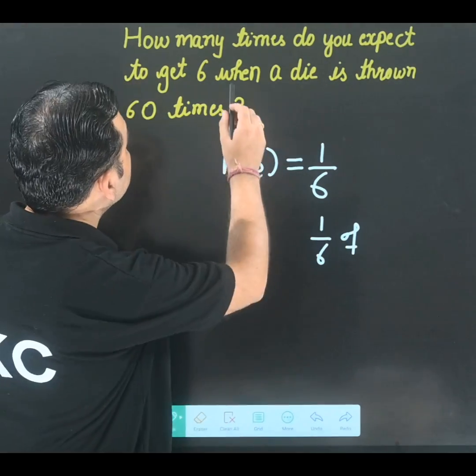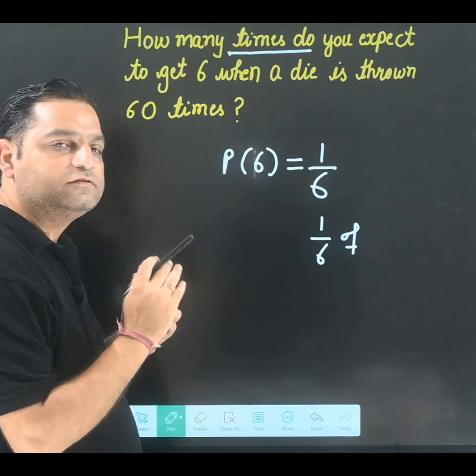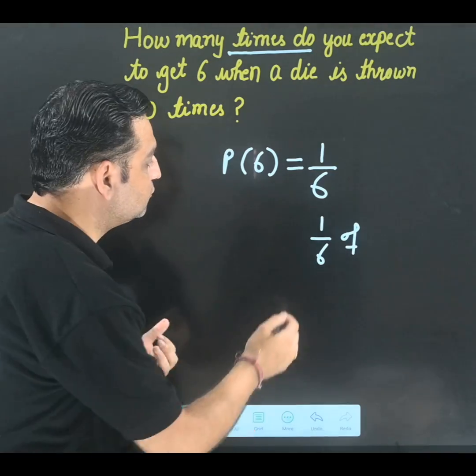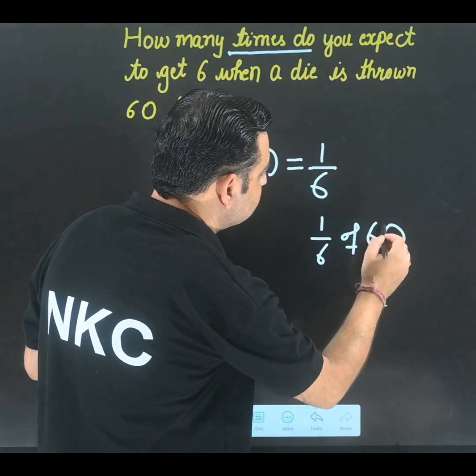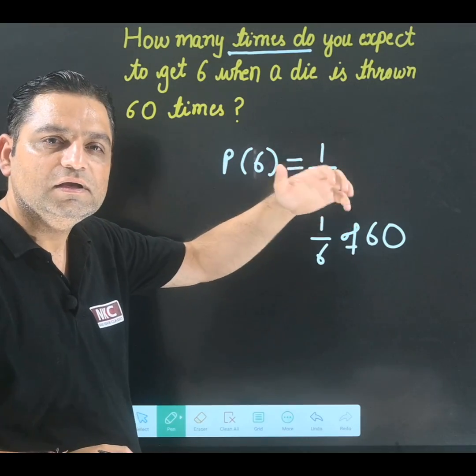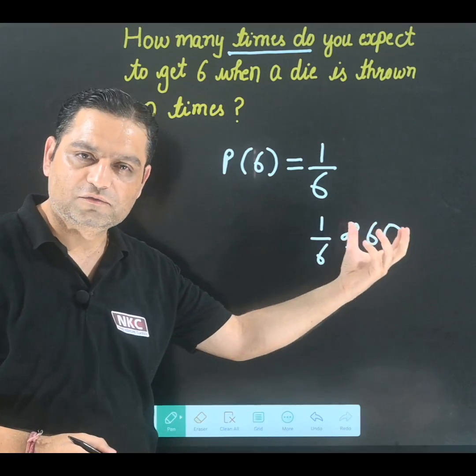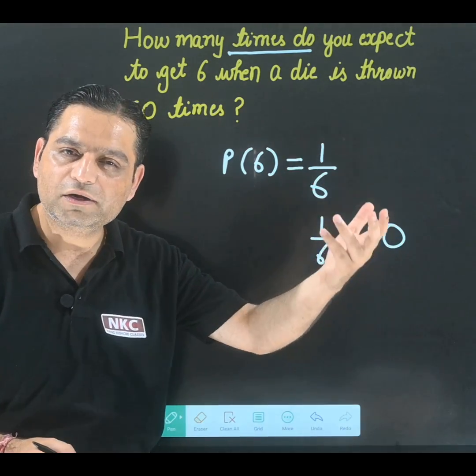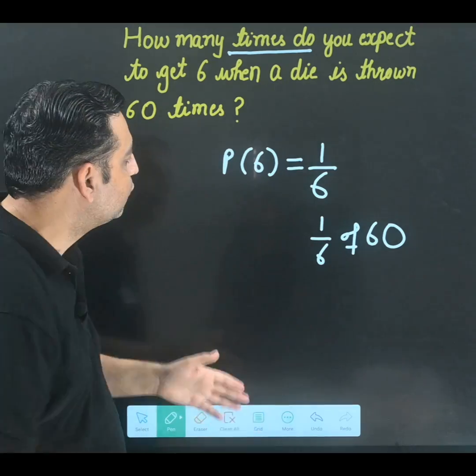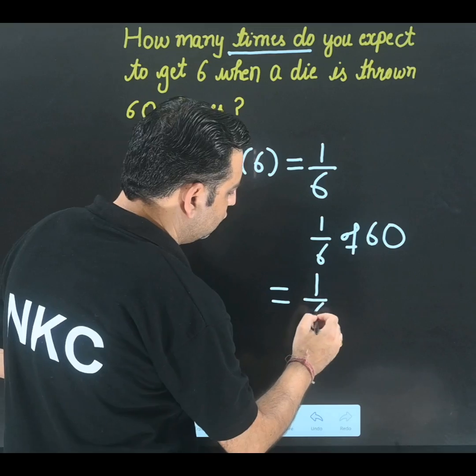That means I need to find how many times it is coming. So number of times 6 will be expected to come is 1 sixth of 60, because my dice is thrown for 60 times. If it is thrown for 100 times, you will find 1 sixth of 100. If it is thrown for 200 times, you will find 1 sixth of 200. Now it was thrown for 60 times, so I am finding 1 over 6 of 60.